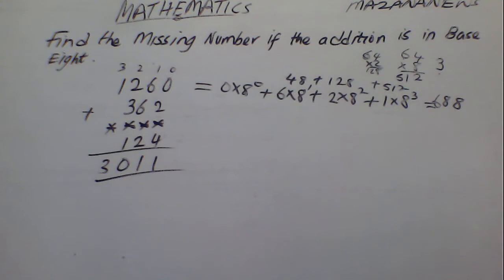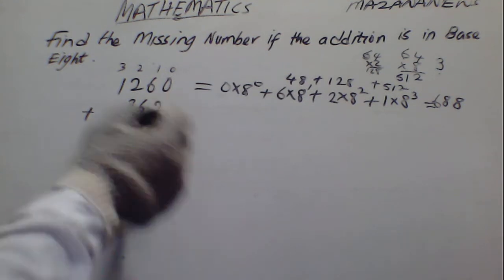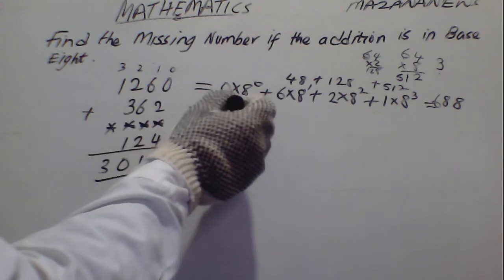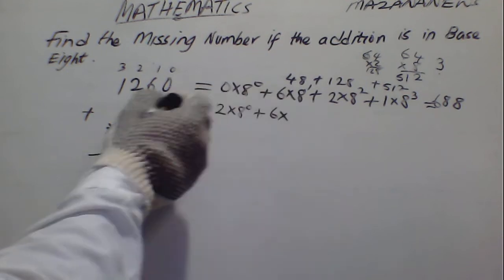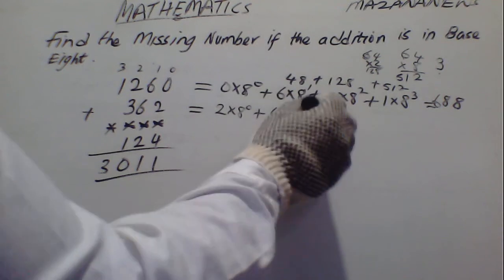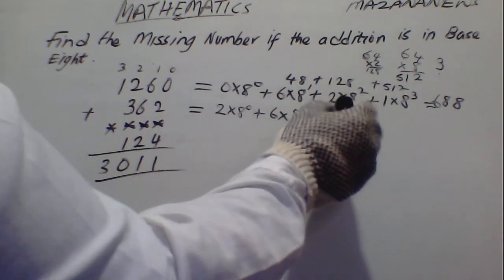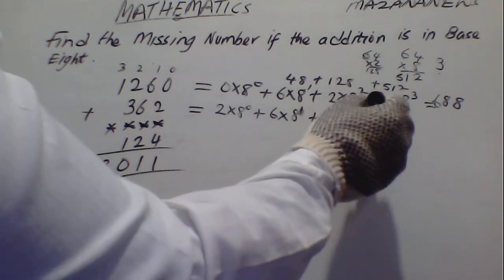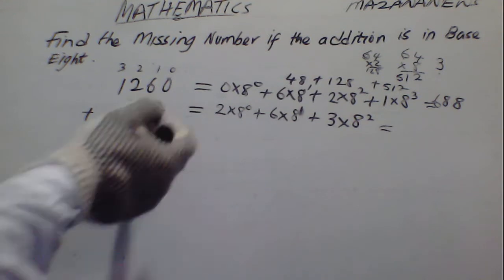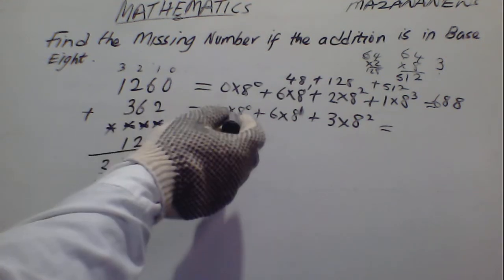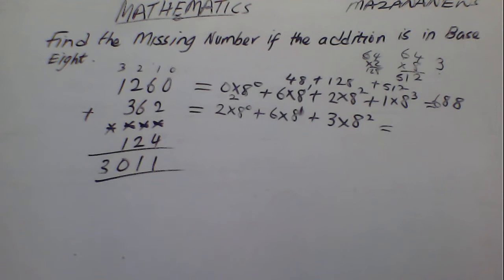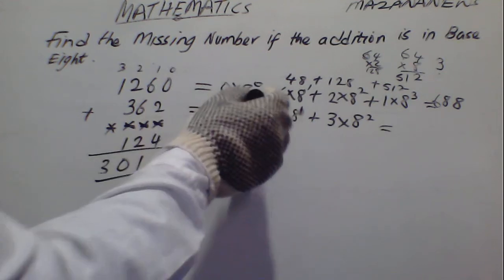Now we have the second value. We have 2 times 8 raised to power 0, plus 4 times 8 raised to power 0, plus 6 times 8 raised to power 1, plus 3 times 8 raised to power 2. I hope you are following — we are simplifying it to make it easy. This gives us: any number raised to power 0 is 1, so 1 times 2 is 2. Plus 48, plus 64 times 3.